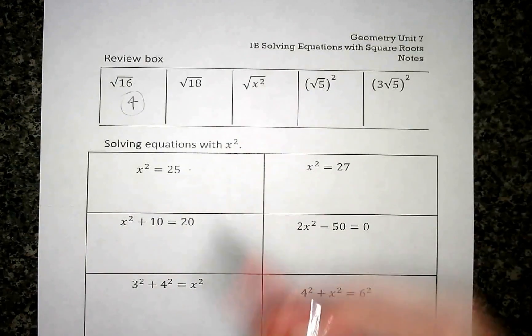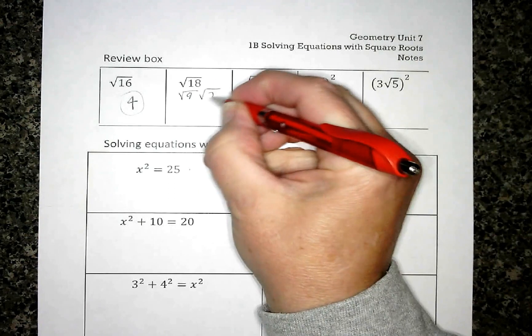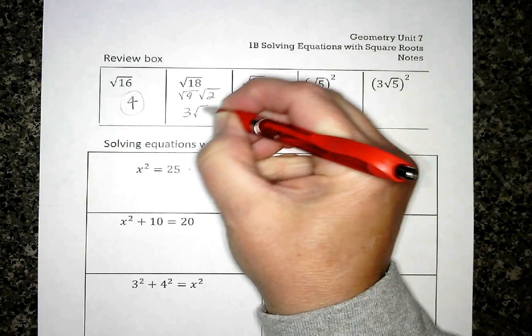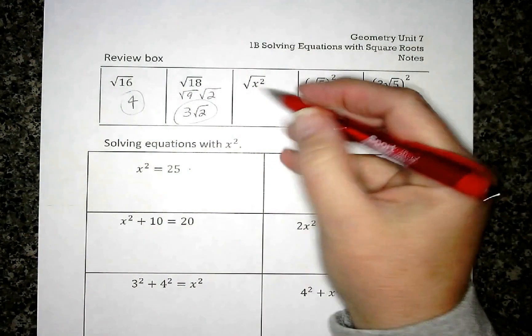The square root of 18 breaks down into 9 and 2. We had that one several times in our last lesson, so that would simplify to 3√2.